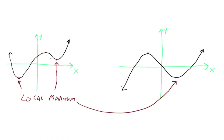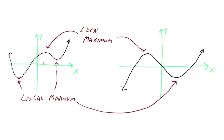So what do you think this one and this one are going to be called? That's right — local maximum. What 'local' really means is that right around this area, these x values right here, that's the highest y value. Locally, right around this little neighborhood. And right around these x values, that's the lowest y value, so it's called a local min.